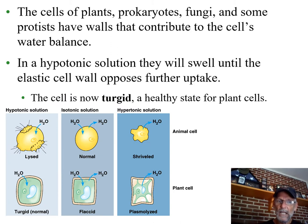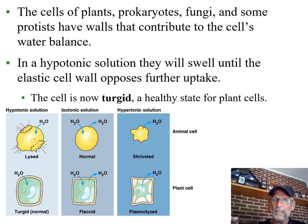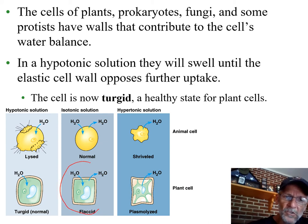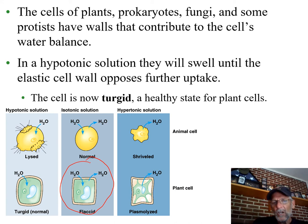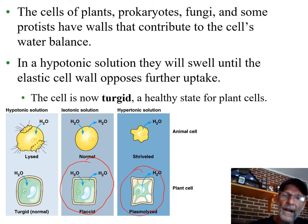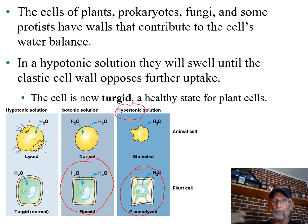A plant cell is different because it has a cell wall — that's structurally how it's different. If a plant cell is surrounded by an isotonic solution, you're okay, but you're kind of like a basketball that's not very fully inflated. If you're a plant and all your cells are like that, you're kind of wilted. If your cells are surrounded by a real dry, hypertonic solution, you're really wilted. Your cell membrane might even pull away from the cell wall, and you're on your way possibly to dying, just like an animal cell from dehydration.